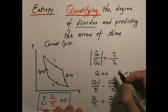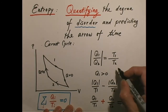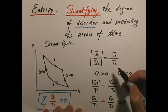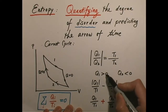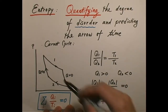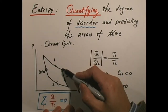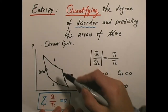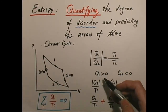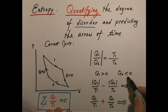q1 over q2 equals T1 over T2. Let me define the sign of q such that if the system absorbs heat, then q is positive, and if it releases heat, then q is negative. From here to there, it's an isothermal expansion where heat is being absorbed by the system, so q1 is positive. And from here to there, the system releases heat as it shrinks, and therefore q2 is negative.